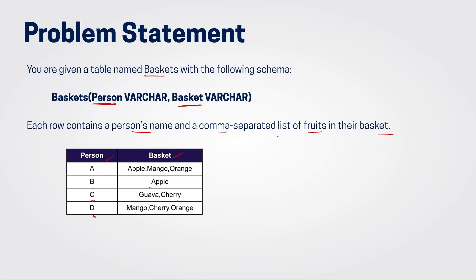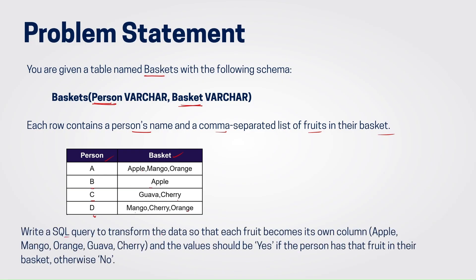Now what you have to do is write a SQL query to transform the data so that each fruit becomes its own column. We have to transform the data such that each of these fruits becomes their own independent columns — one separate column for apple, separate column for mango, similarly for orange, for guava, and for cherry. The value should be yes if the person has that fruit in the basket, otherwise it should be no.